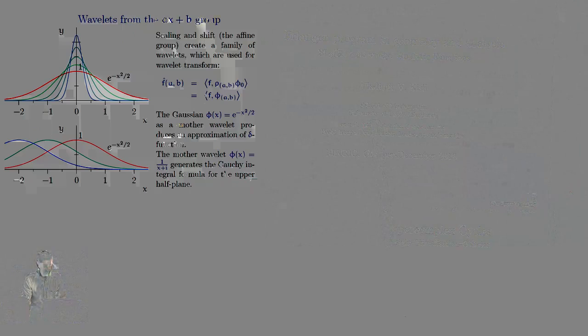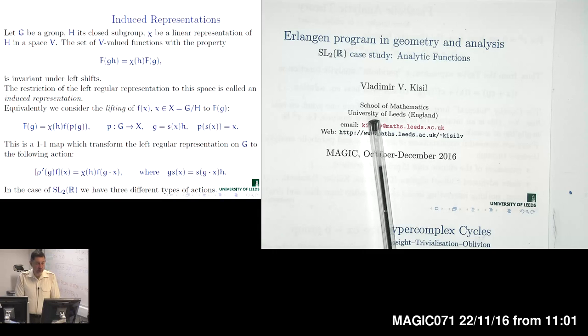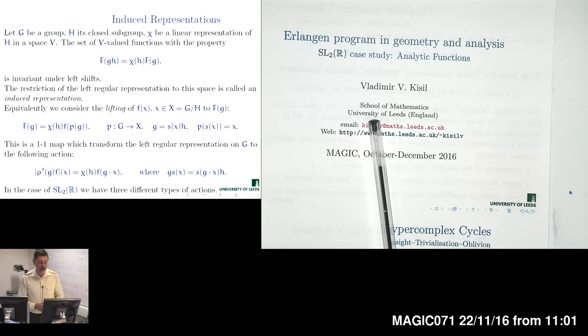As discussed in the previous lecture, we are going to use wavelet construction to represent our geometrical approach to function theory. To this end, we will use a representation obtained by an induction procedure, starting from the character of a certain subgroup and expanding it to the representation of the entire group. The subgroups we are considering are our old friends A and K, one-dimensional continuous subgroups of SL2R.